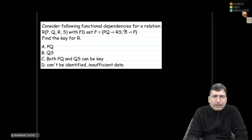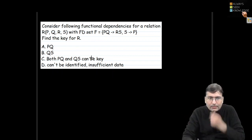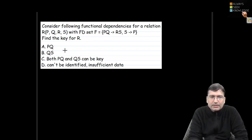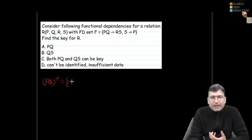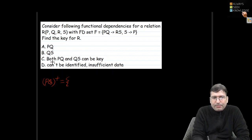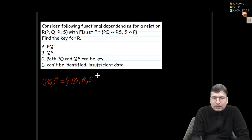Now let's solve the next problem. Consider a relation R with attributes PQRS and given functional dependencies, and we need to find the key for R. Let's check whether PQ is a key. Finding the closure of PQ: we have PQ, and PQ can derive R as well as S, giving us PQRS — the complete attribute set. So PQ can be a key.